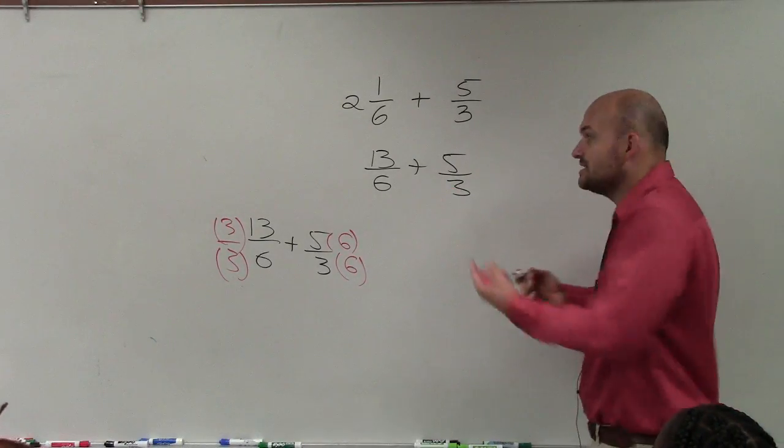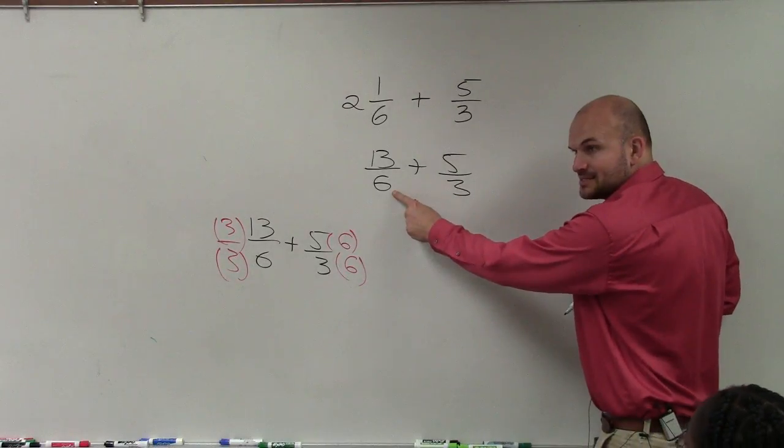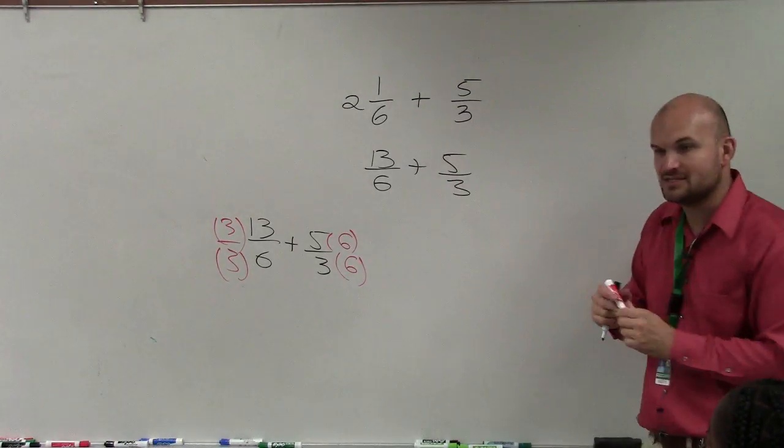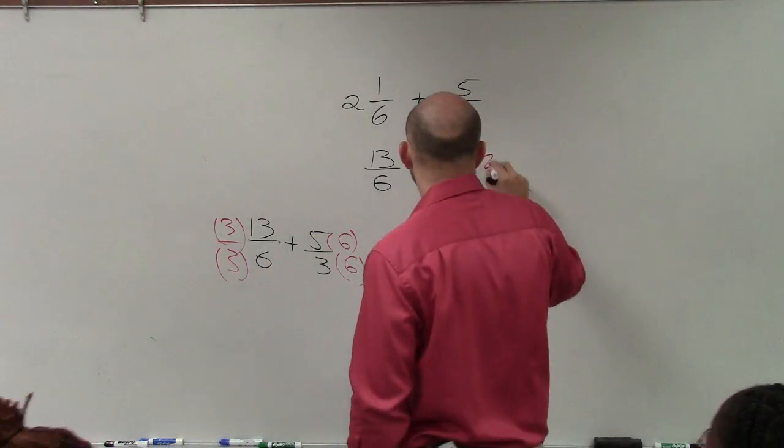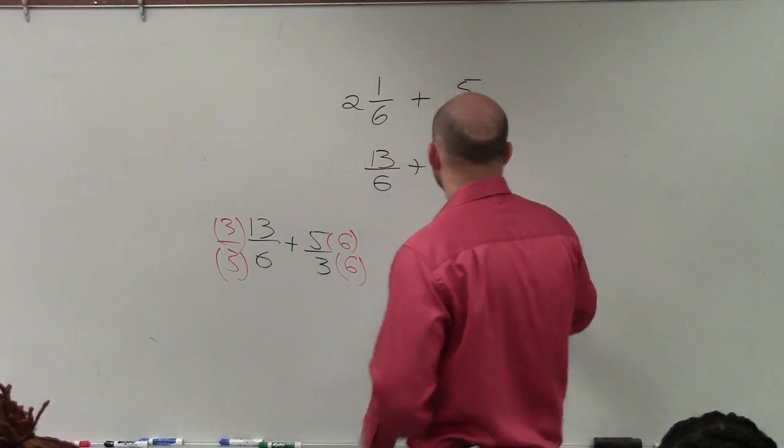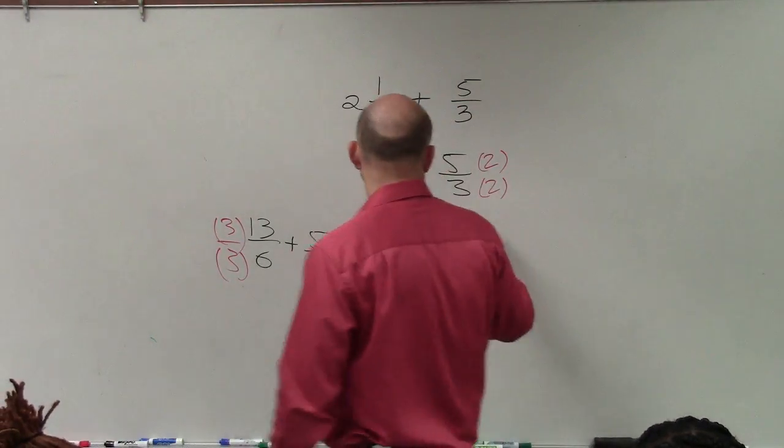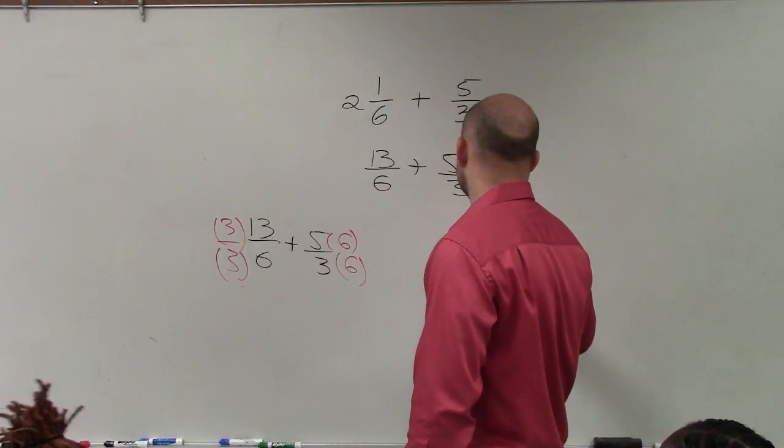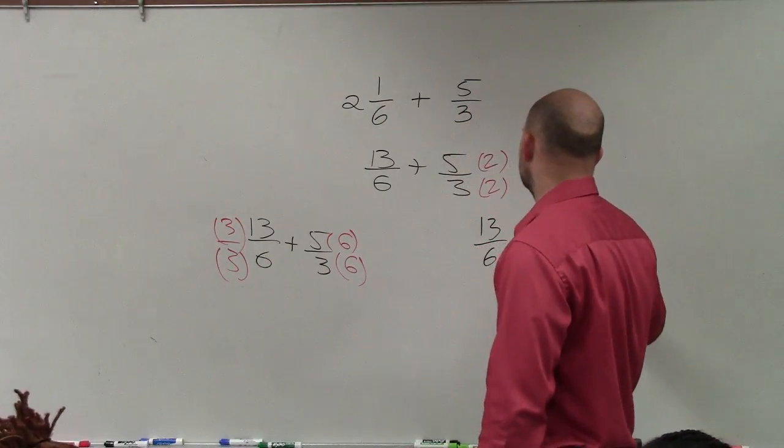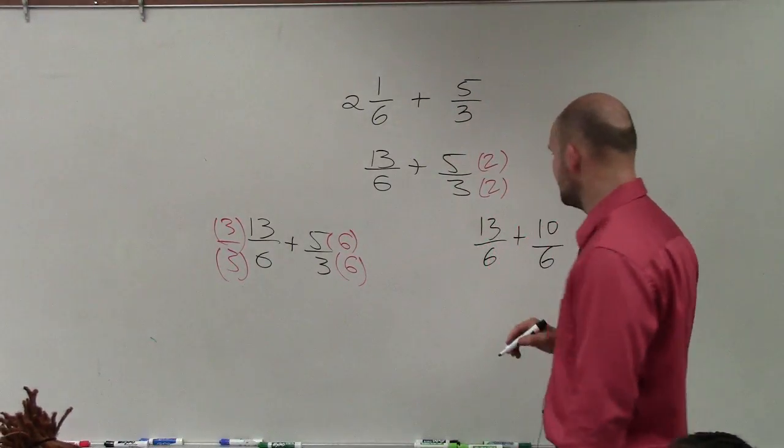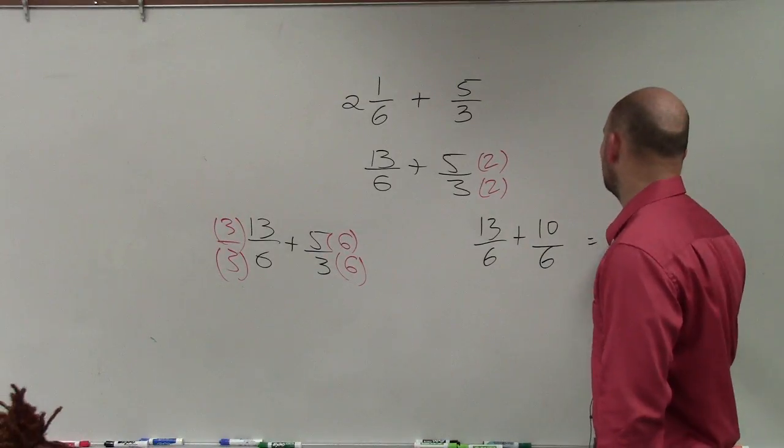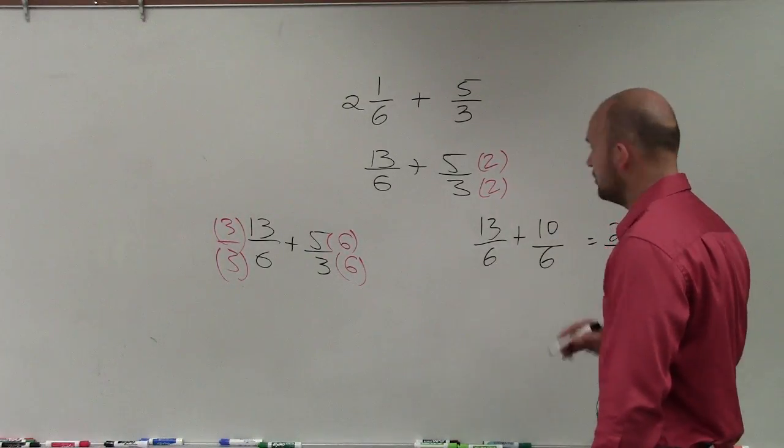So therefore, 6 is my LCD. This is already 6. So all I have to do is multiply this by 2. Therefore, I have 13 over 6 plus 10 over 6, which is just going to equal 23 over 6.